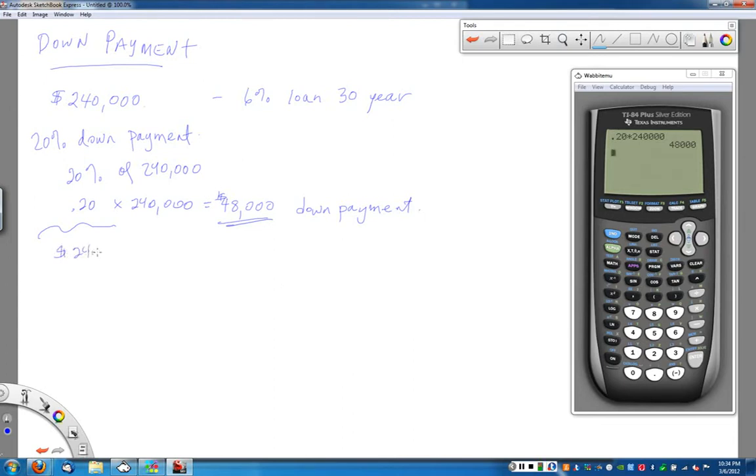When I want to go and figure out what my monthly payment is going to be for the house for those 30 years, I have to figure out how much I'm actually taking the loan out for. So even though the value of the house was $240,000, I'm going to pay off $48,000 up front to show the bank that I am committed to this home and that I really want to keep it and take care of it. The down payment takes off that $48,000 from the $240,000 asking price.